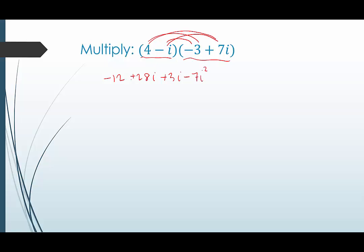And then negative i times 7i would be minus 7i squared. So we're going to combine our like terms. In the middle here, we have 28i and 3i, that would be 31i. And then also this last term, we have an i squared. Remember, i squared is the equivalent of negative 1. This would be like negative 7 times negative 1, which is positive 7. Negative 12 plus 7, those are the two real parts. We can combine those to give us negative 5. So we end up with negative 5 plus 31i. This number is in standard complex form with the real part first and the imaginary part second.